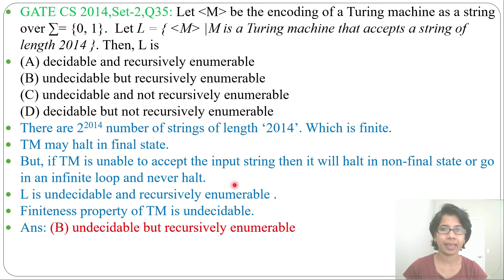Just remember finiteness, emptiness, membership, regularity, recursiveness. All these properties are undecidable for Turing machine.